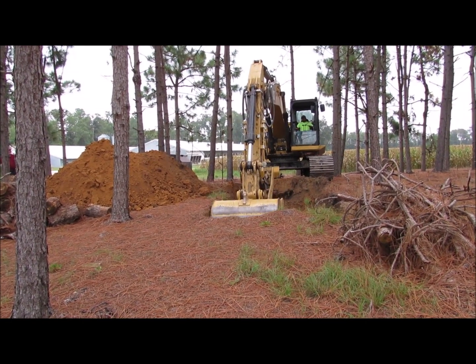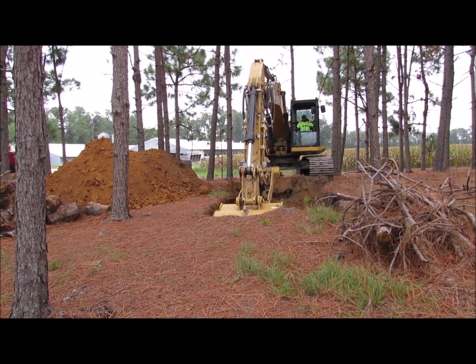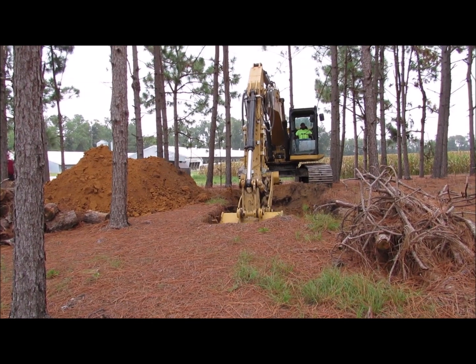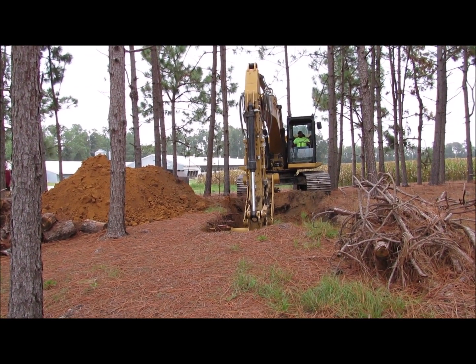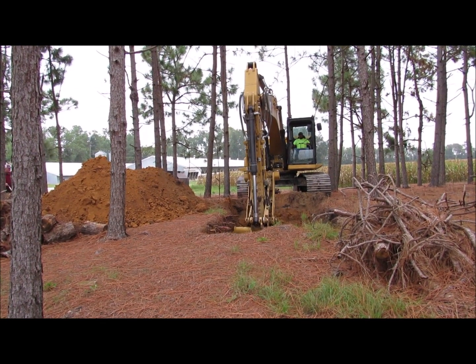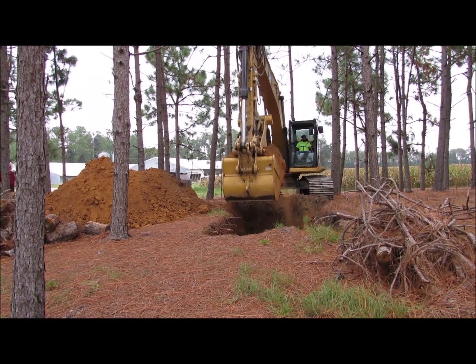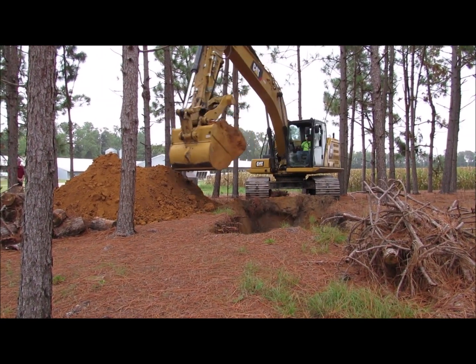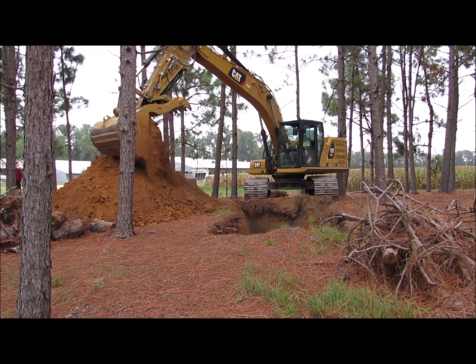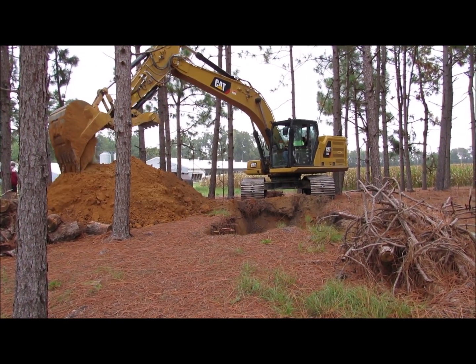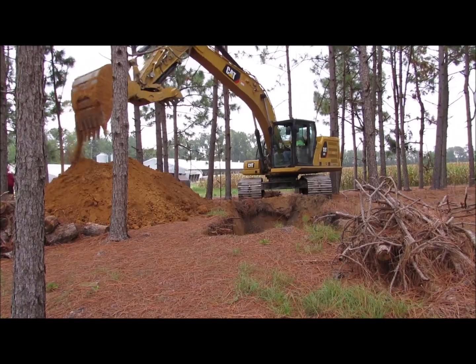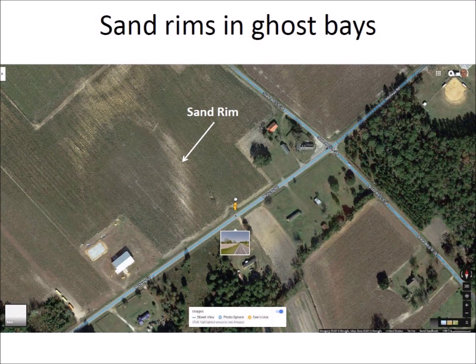In 2019, deep excavation of the rim of Arabia Bay in North Carolina demonstrated that the rims of Carolina Bays consist of permeable sandy soil through which water filters rapidly. Some Carolina Bays are on land that has been developed for farming and their outline can be seen in aerial maps as Ghost Bays.